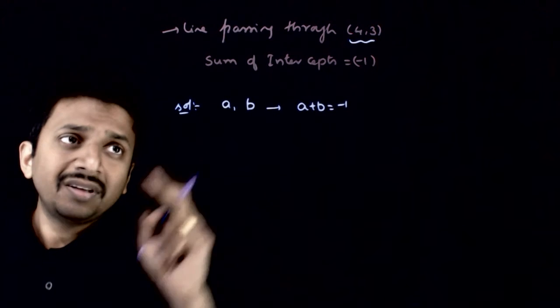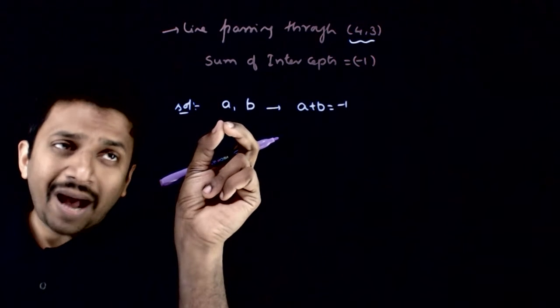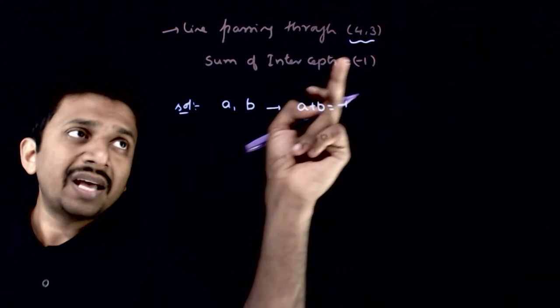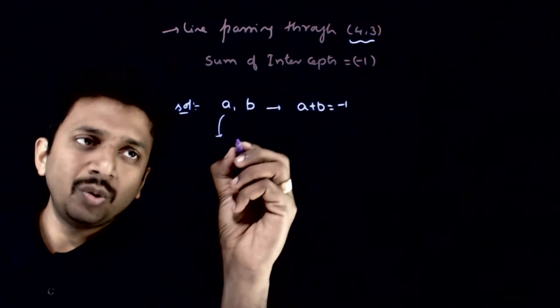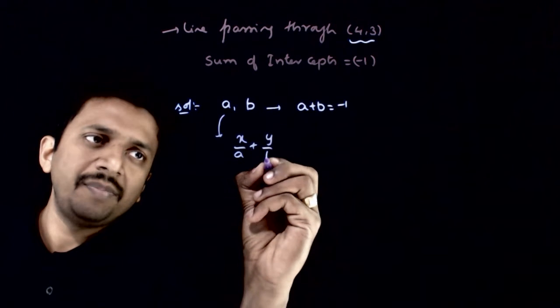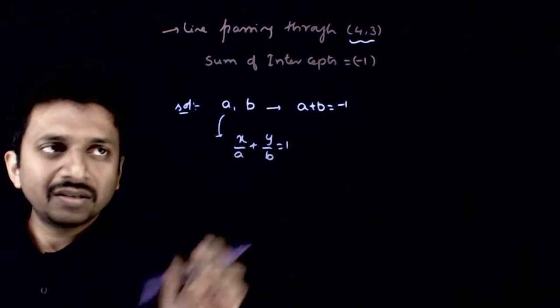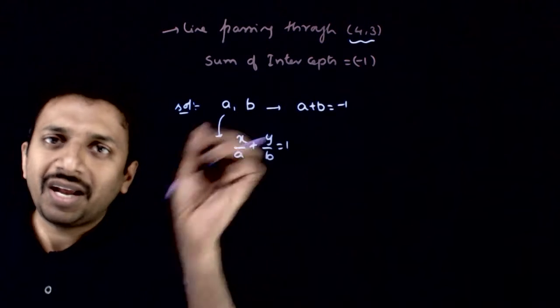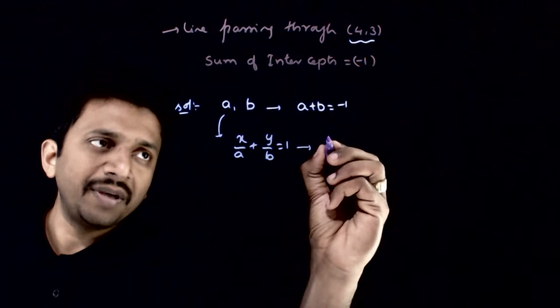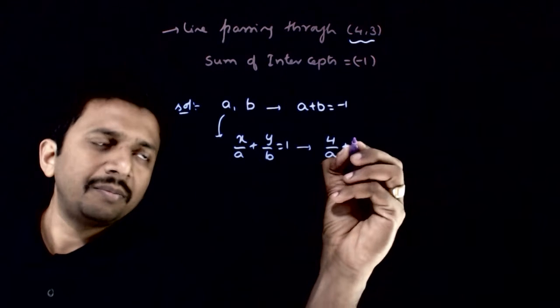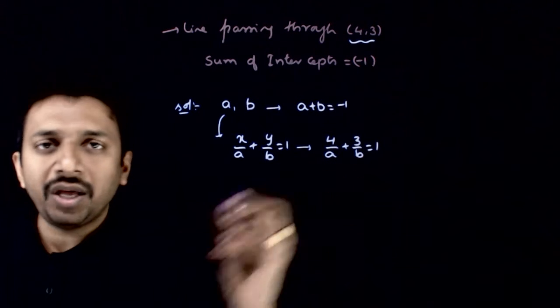According to the first information, the line passing through these two intercepts has to pass through 4,3 also. So what is the line having these two intercepts? x by a plus y by b is equal to 1. This is the line having intercepts a and b. Now this line has to pass through 4,3. That means 4 by a plus 3 by b should be equal to 1.